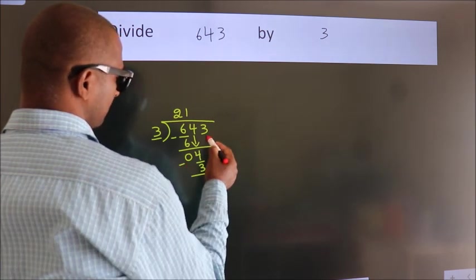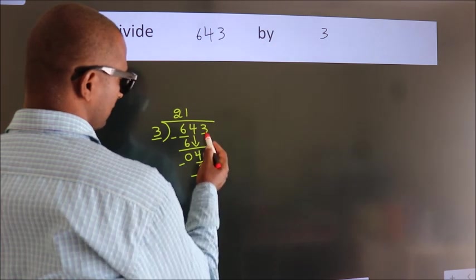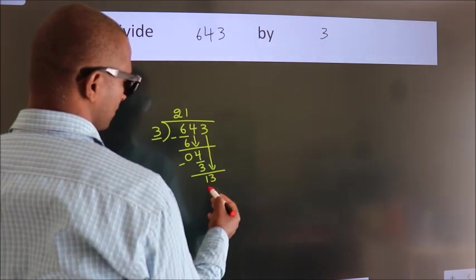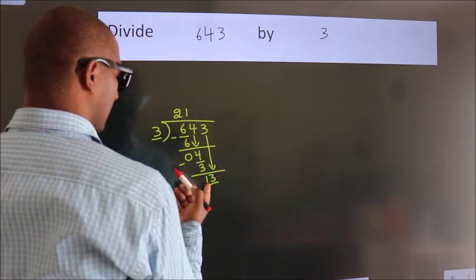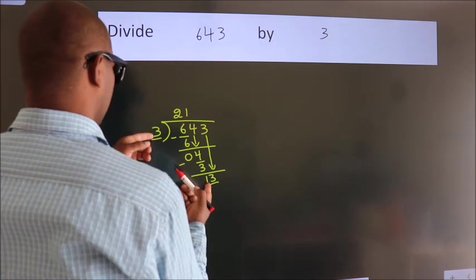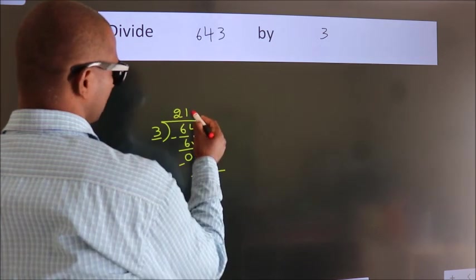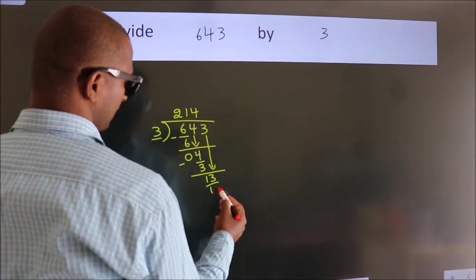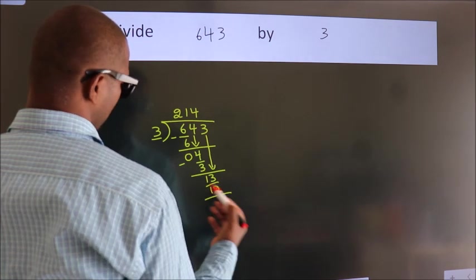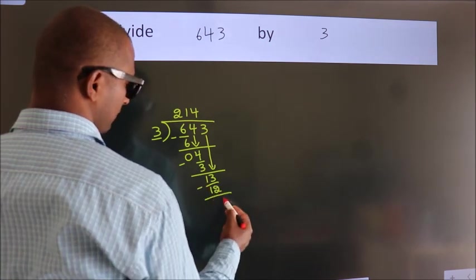After this, bring down the beside number. So, 3 down, giving us 13. A number close to 13 in the 3 table is 3 times 4, which is 12. Now we subtract and get 1.